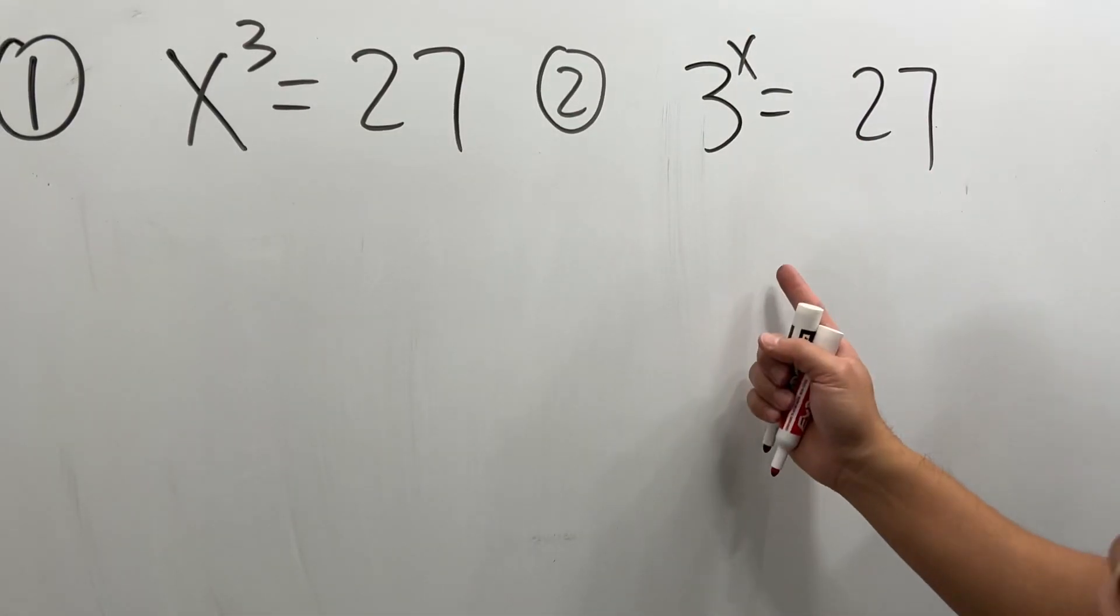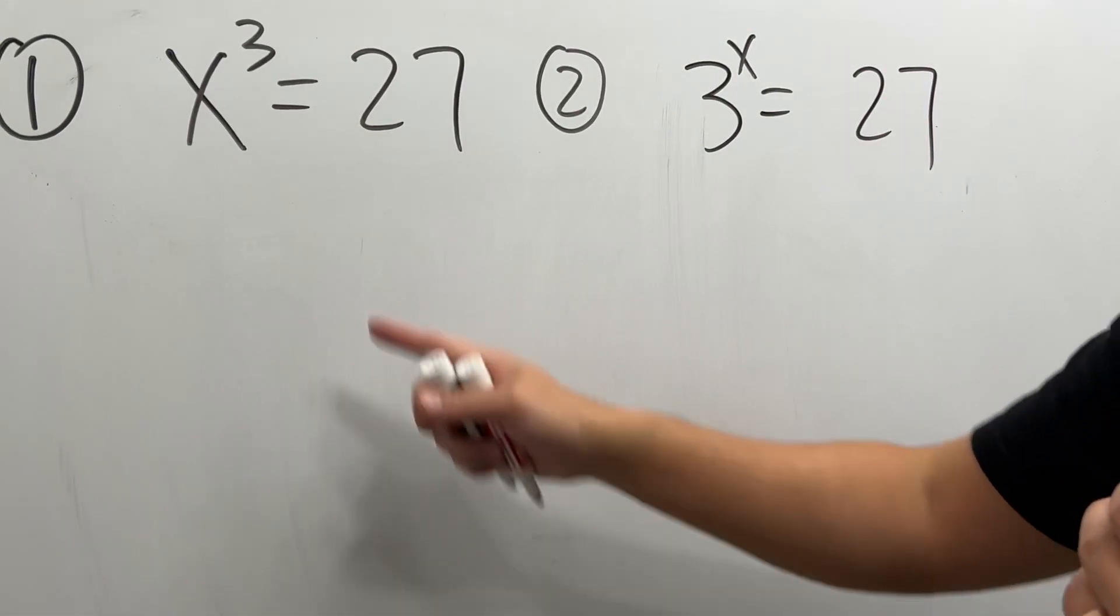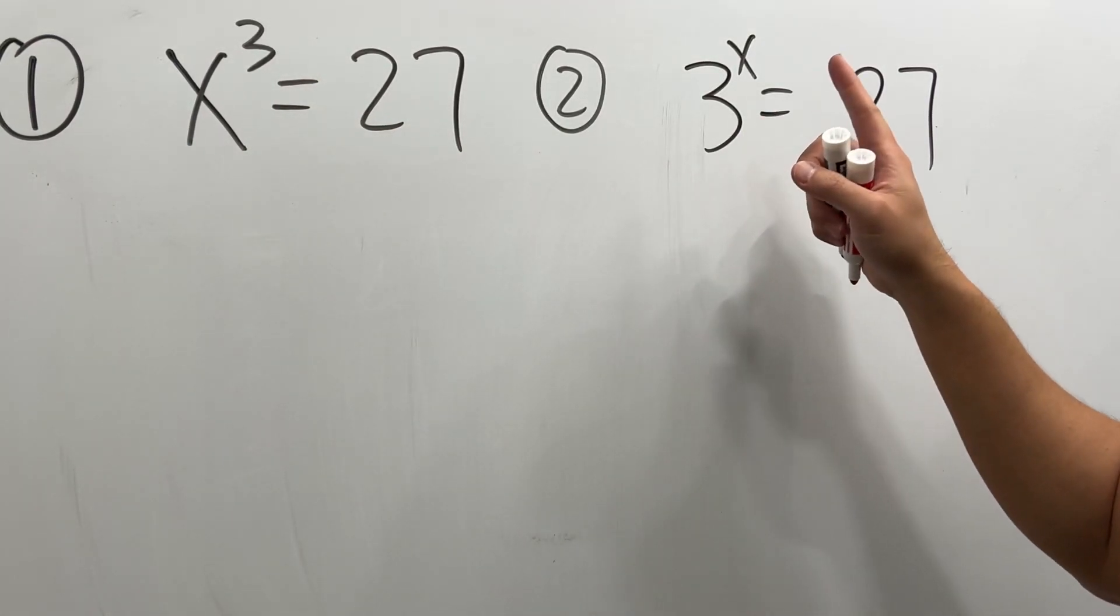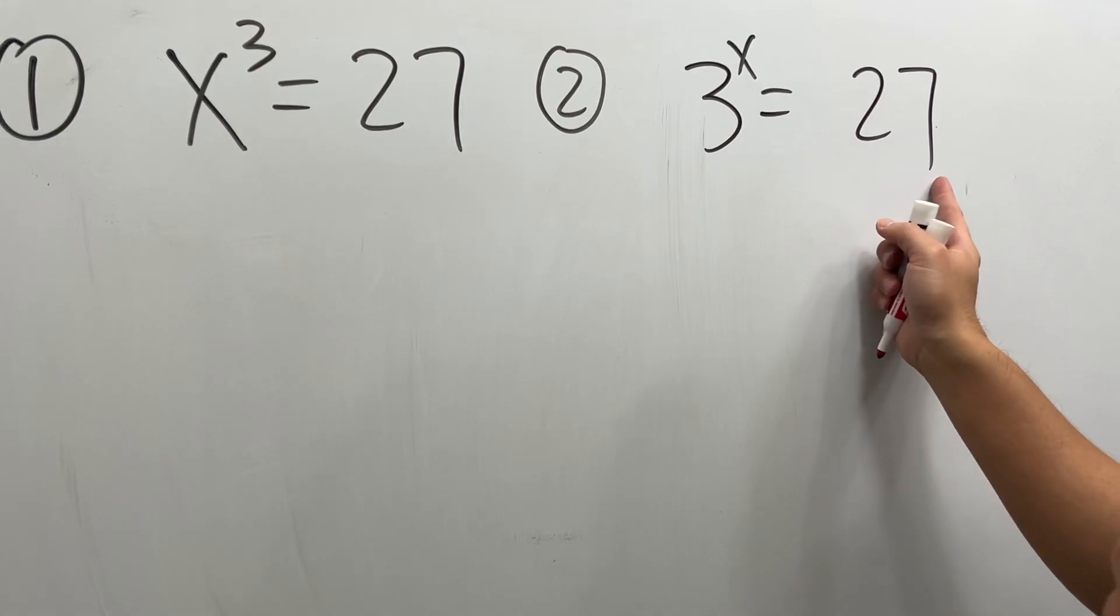These two equations usually confuse a lot of students, so check this out. First we have x³ equals 27. The other one we have 3 to the x power is equal to 27.